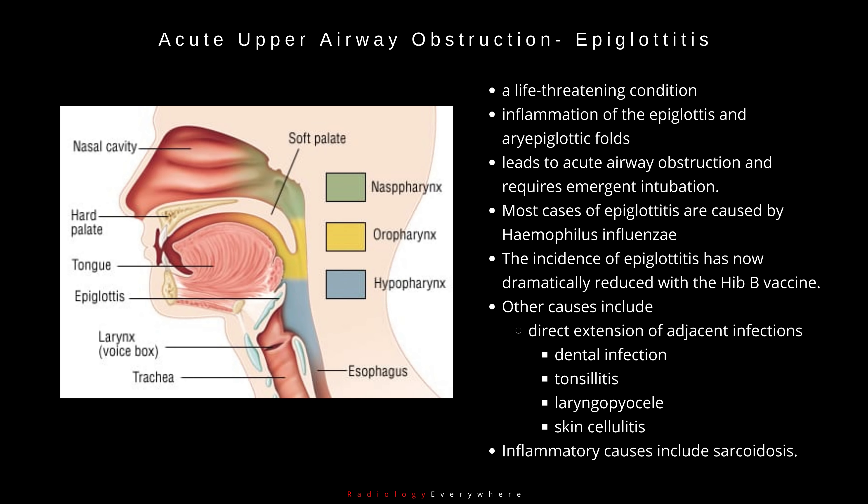Epiglottitis is a life-threatening condition caused by inflammation of the epiglottis and aryepiglottic folds, which leads to acute airway obstruction and requires emergent intubation. Most cases of epiglottitis are caused by Haemophilus influenzae and are now preventable by immunization with the HiB vaccine.